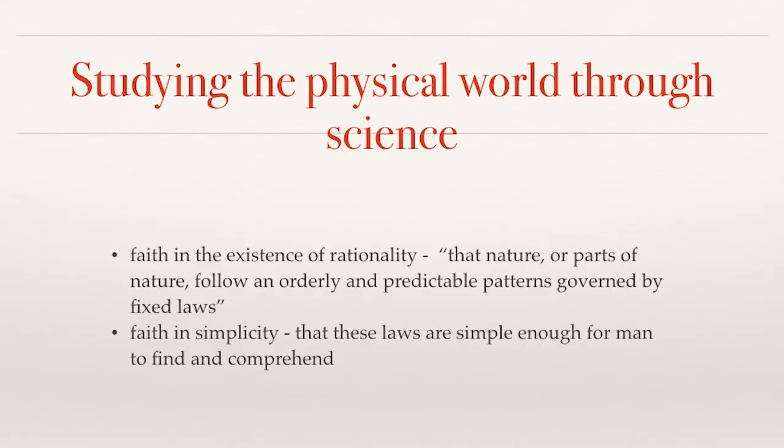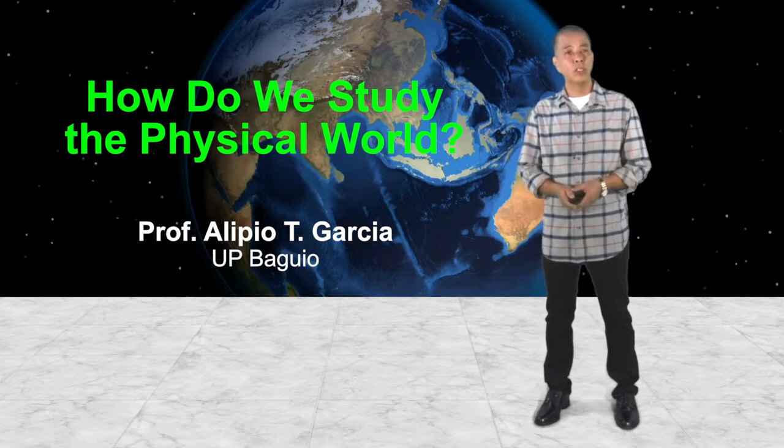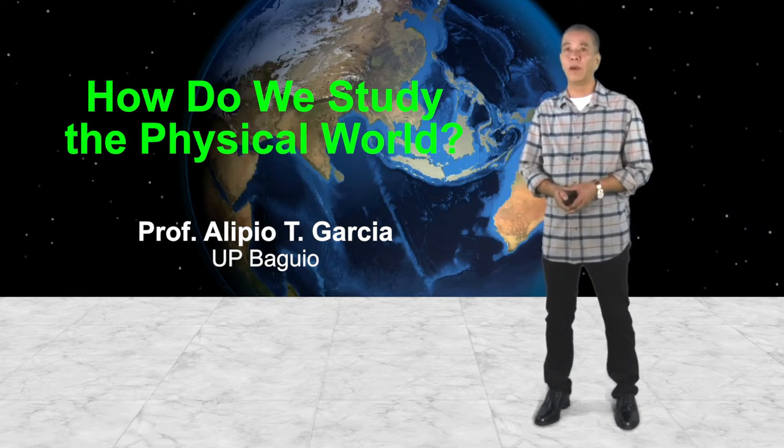In science, there is always this underlying faith in the existence of rationality. We say that nature, or parts of nature, follow an orderly and predictable pattern governed by fixed laws. Ever since we took away divine intervention — or the whims of the gods — as the main cause, such as why there is a storm, that is the true birth of science as a way of knowing. We always have this underlying faith that things can be explained in a logical or rational manner, that all phenomena behave in a rational manner.